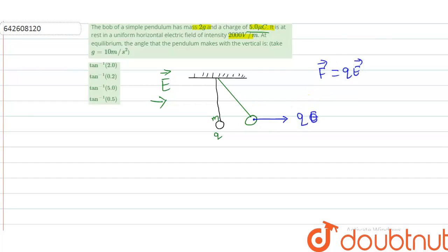The force acting in the direction of electric field on charge q is qE. qE charge will act here, and mg is acting downwards.